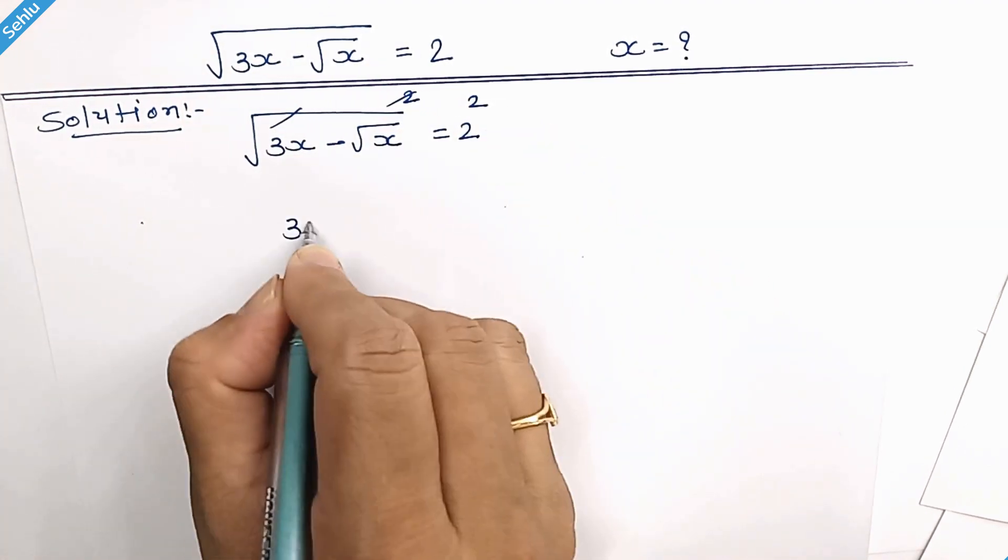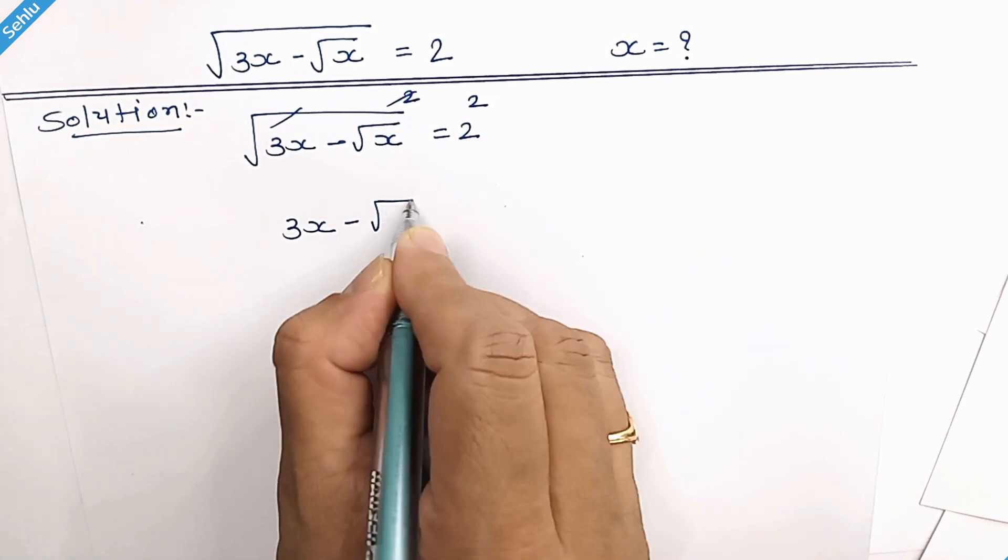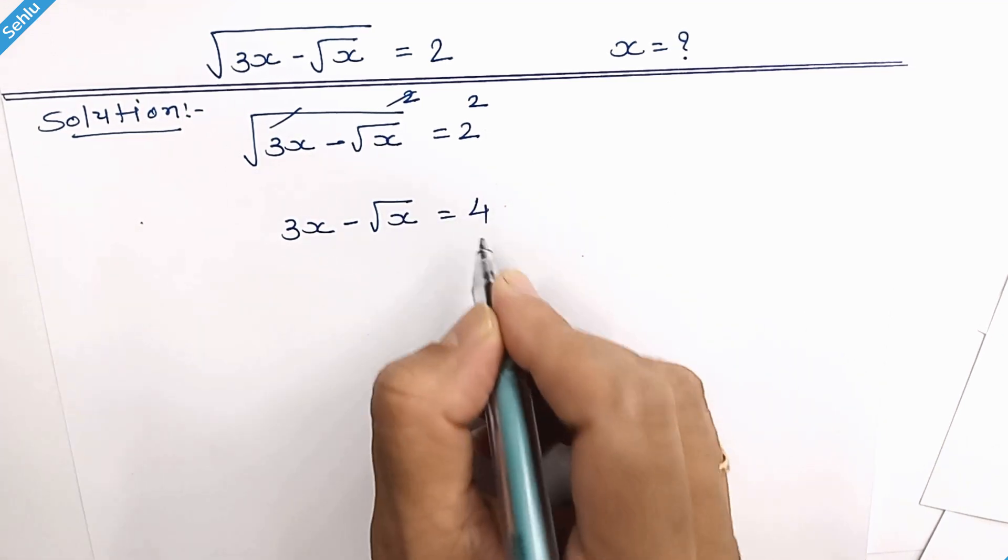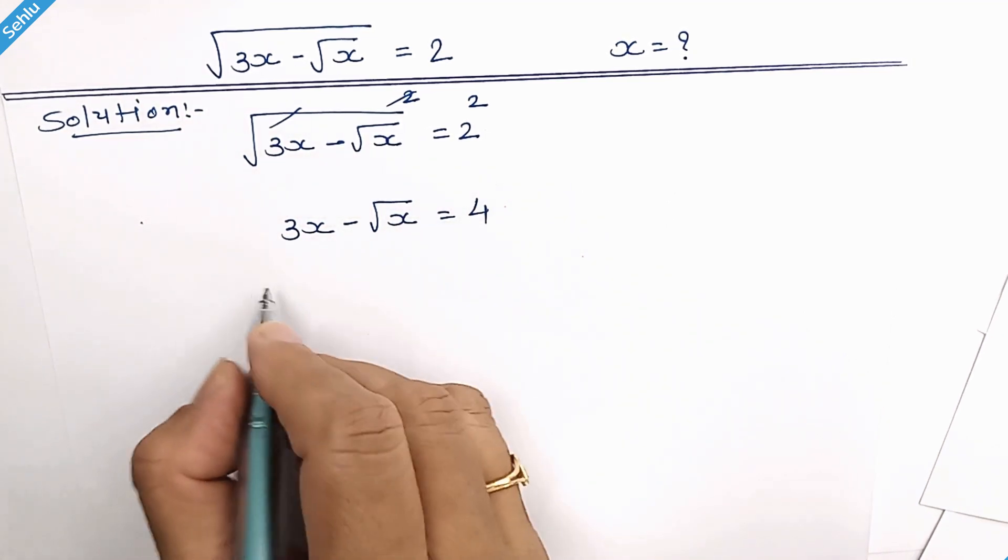So we have 3x minus square root of x equals 2 squared, which is 4. Moving forward to the left hand side.